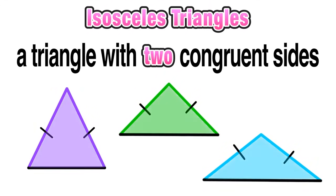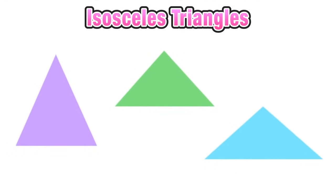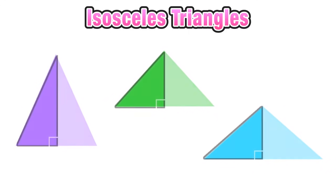Now let's take a look at these isosceles triangles without any markings of angles or sides. There's an important relationship we want to see here. Imagine if we were to vertically cut these triangles in half right down the middle — our result would be a right triangle, just like the ones shown.